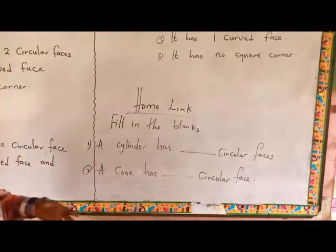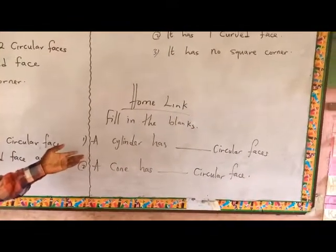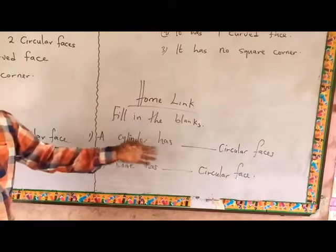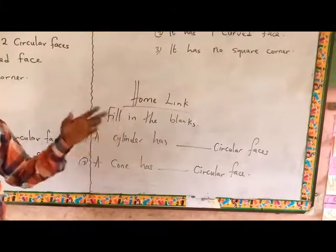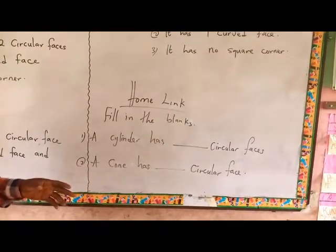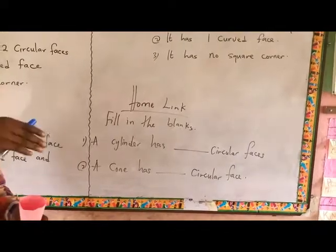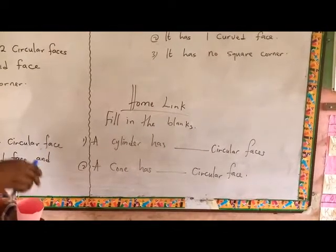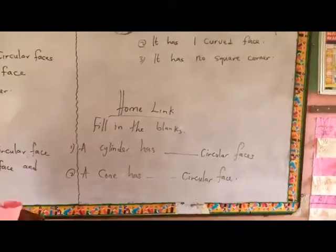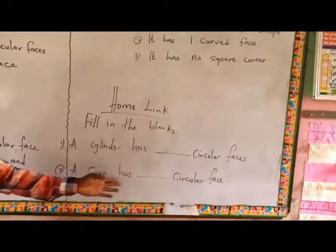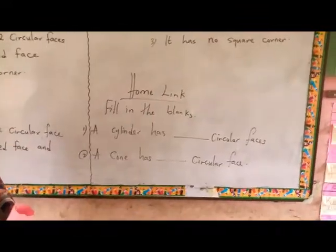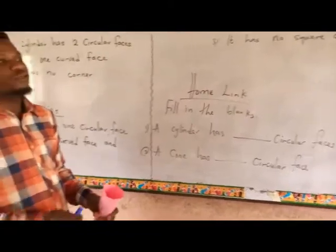You have to fill in the blanks. One, a cylinder has blank circular faces. That is, how many faces does a cylinder have? Look at your water bottle at home. Look at the circular faces. Can't see how many? Write the answer. Then, a cone has blank circular face. Look at your funnel tool. Look at how many circular faces there are.